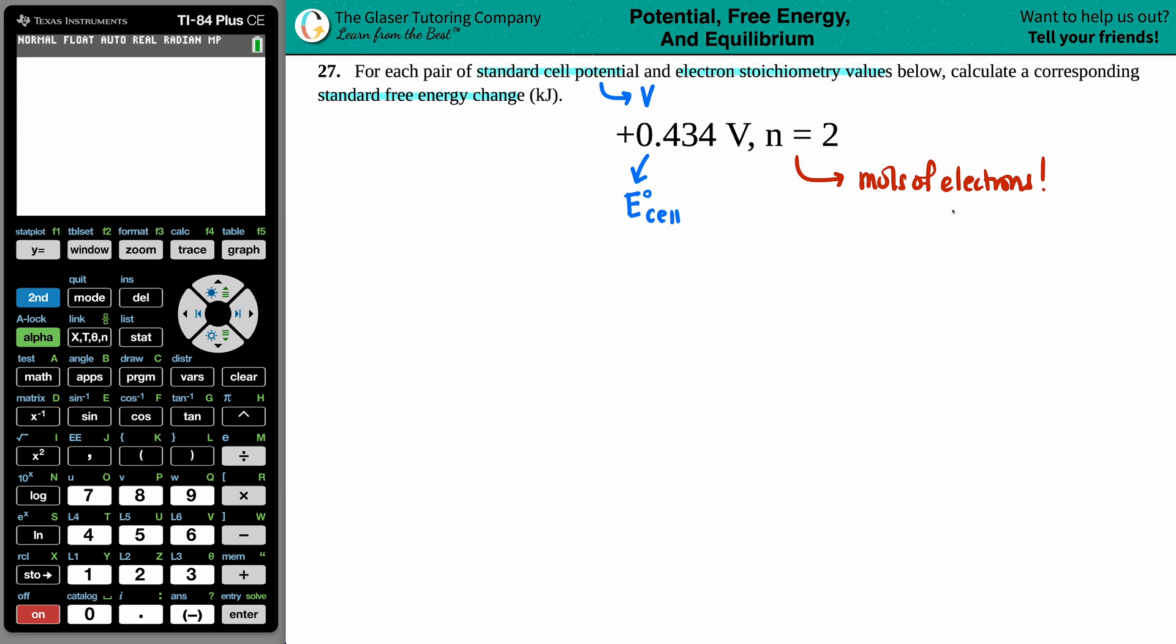Now I say to myself, okay, well I have an E-cell value, I got an n value, and they want us to find out that standard free energy change. Remember that a change in free energy is a delta G standard. I'm just solving for that. What's the formula that has these three values in it? There's only one of them and that's this: ΔG° = -nFE°cell.